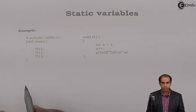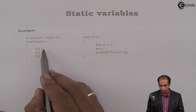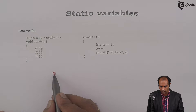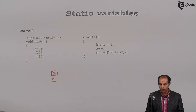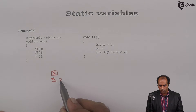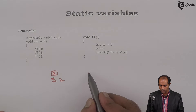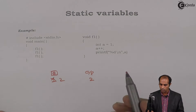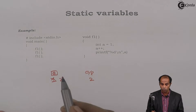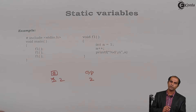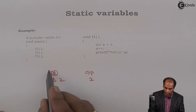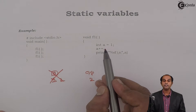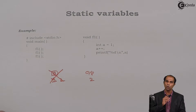F1 is called first. I am calling a function called F1. It takes A as 1, so this variable A is associated with 1. A++ makes it 2. printf("%d", A) — the output is 2. After that the function ends. When the function ends, what happens to variable A? This variable A is destroyed because A is a local variable.